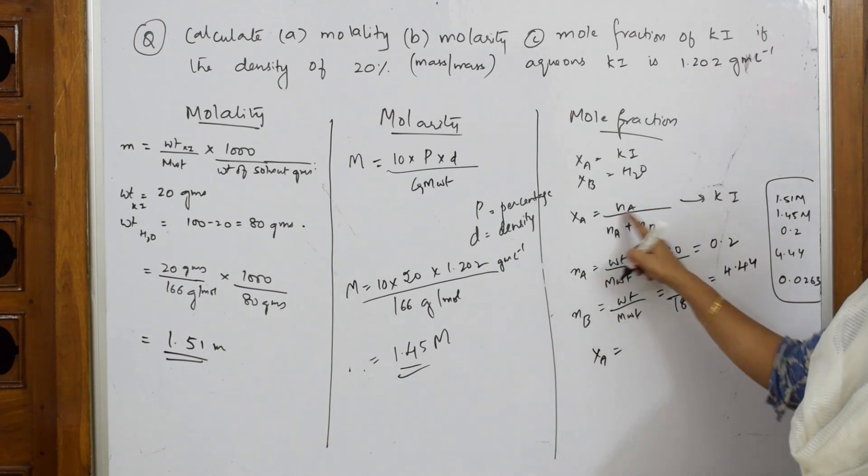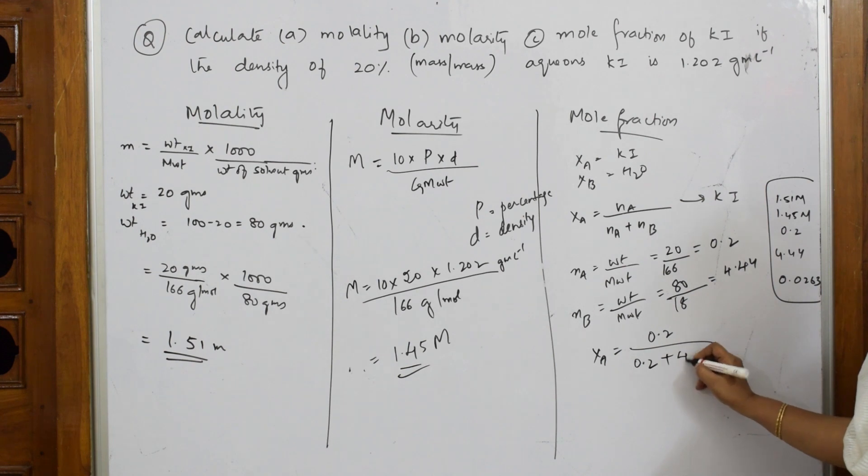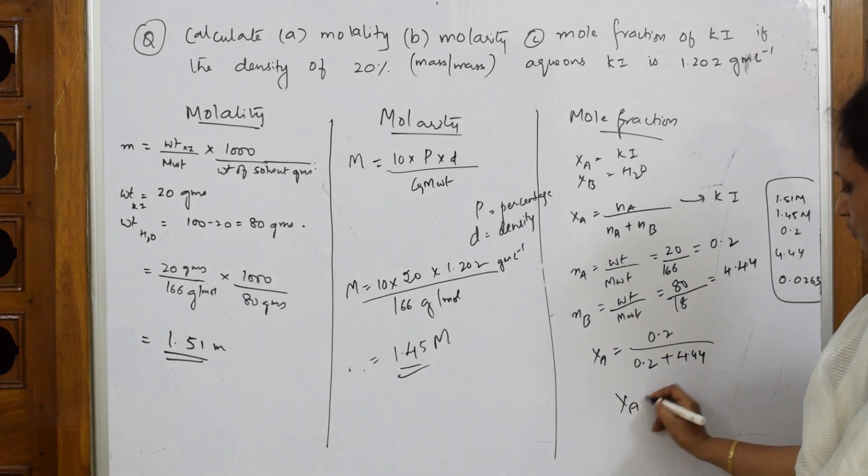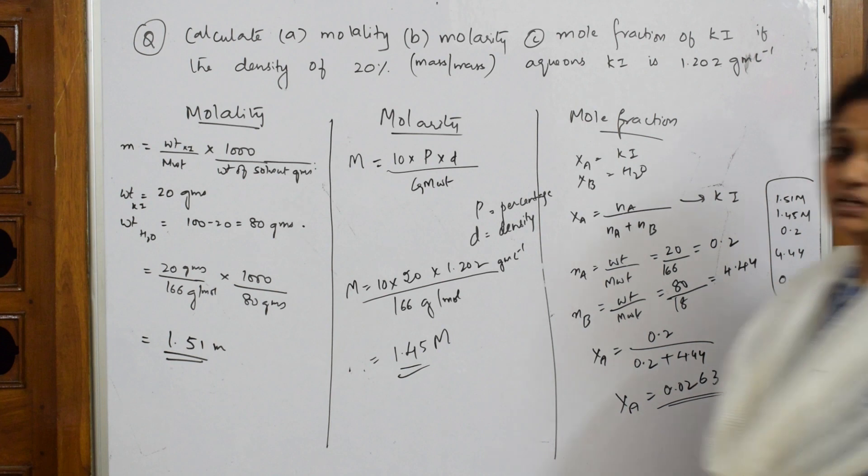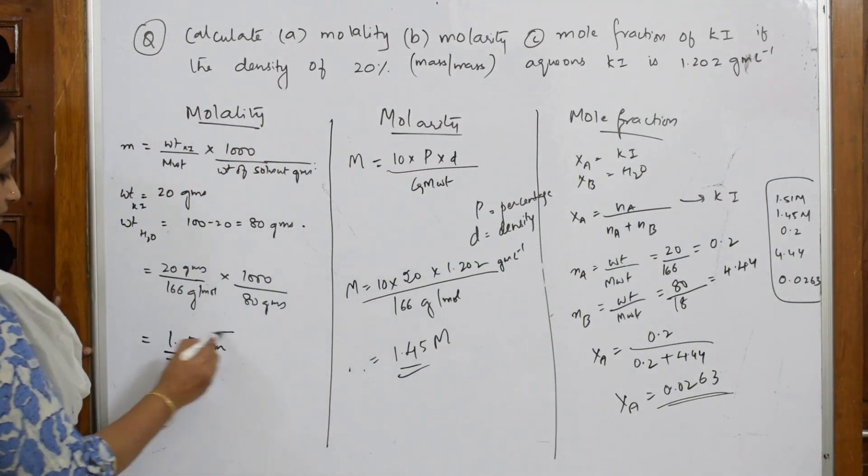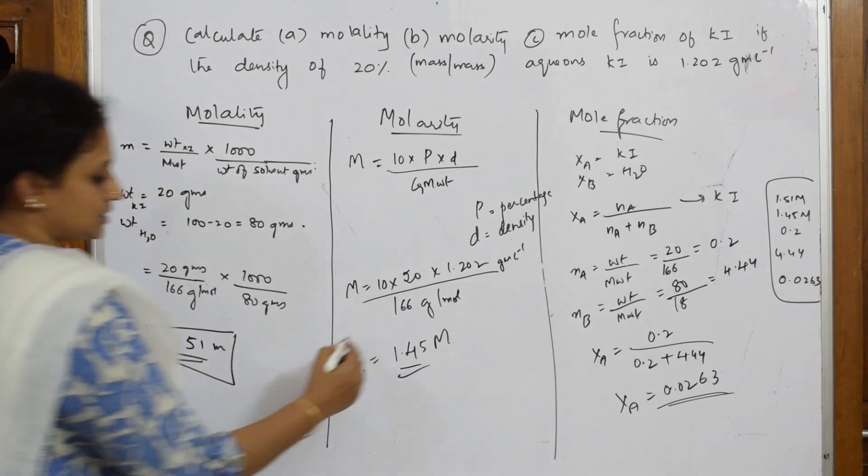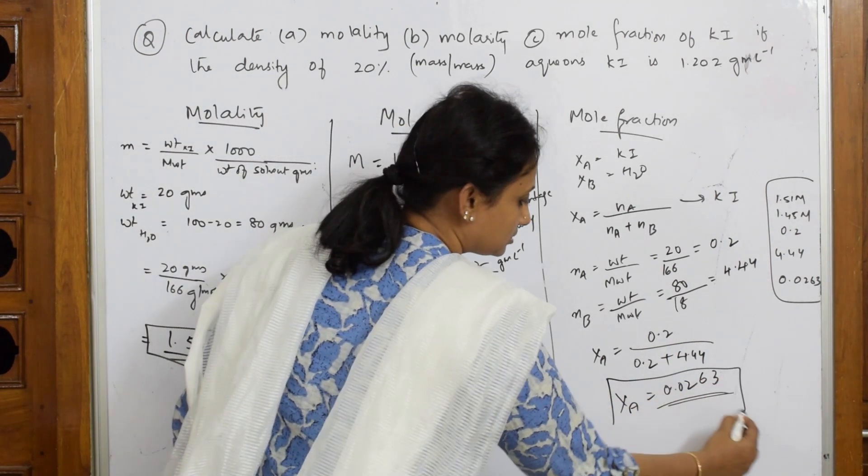Xa, I have to find out. Na, I got it as 0.2 plus Nb, I got it as 4.44. When I solve this whole thing, I get a mole fraction of 0.0263. It's a ratio, so not written any units. This is your first answer, this is your second answer, this is your third answer.